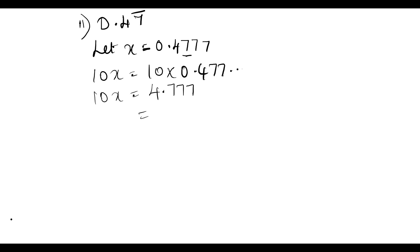Now split this into a numerical value plus x. Since x is 0.4777, subtract this from 4.777. We will get 4.3, so 4.3 plus x.